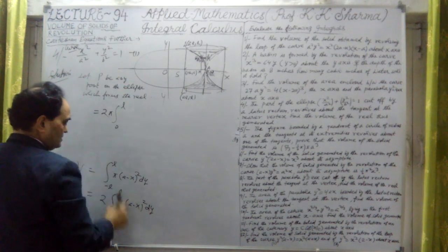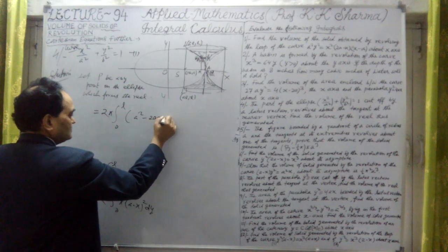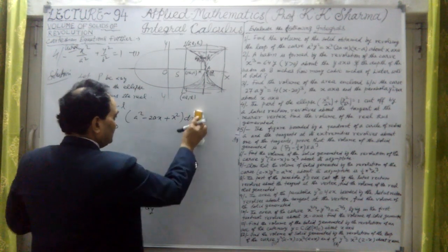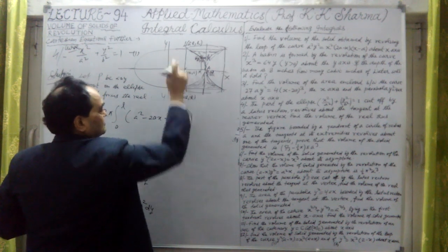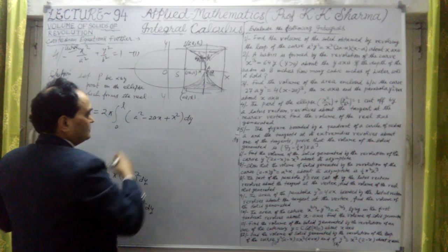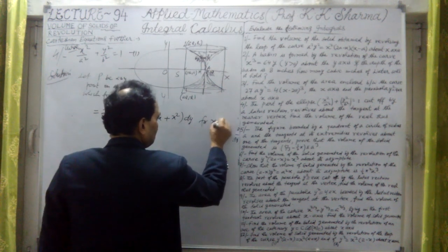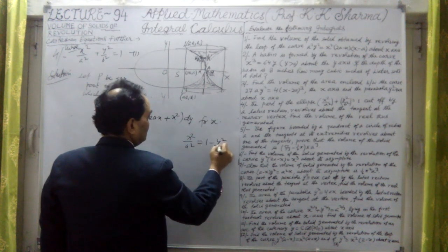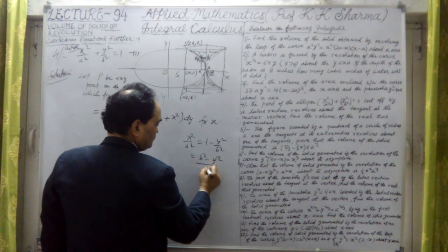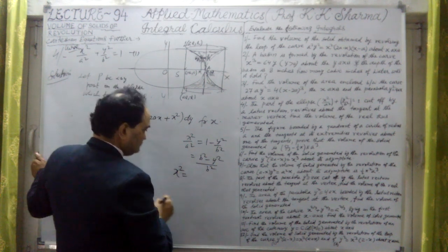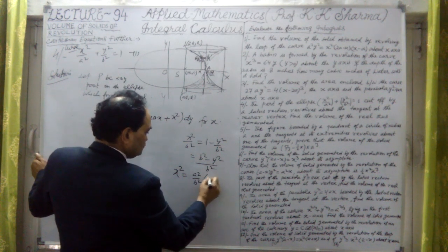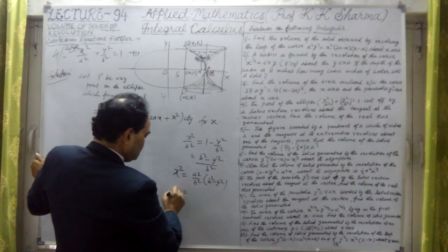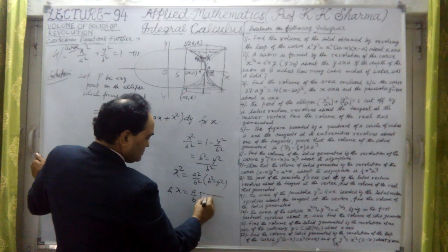So the volume is twice pi times the integral from 0 to L of: A squared minus 2A times (A over B) times root(B squared minus y squared) plus (A squared over B squared) times (B squared minus y squared), all dy. Here the limit is for y because y coordinate goes from minus L to plus L.